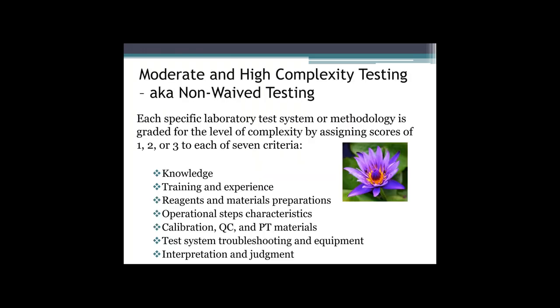The other two levels of testing are moderate and high, also called non-waived. The criteria listed on this slide are considered key elements to performing a test correctly. When tests are determined to not meet the waived criteria, they are assessed based on these items to determine if they are moderate or highly complex. To classify a test, each element is scored with a 1, 2, or 3 — 1 being the more basic and 3 being the most complex.